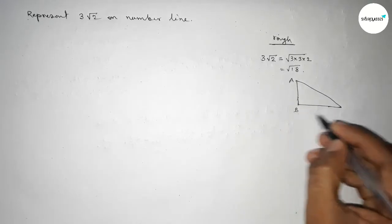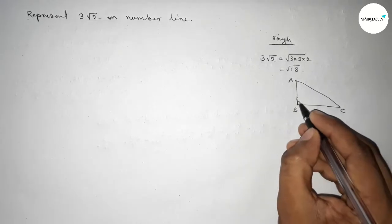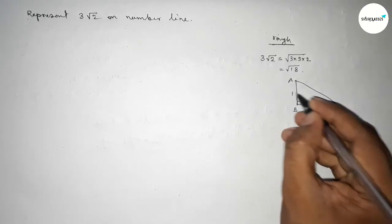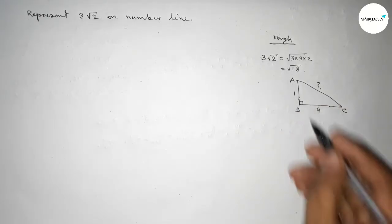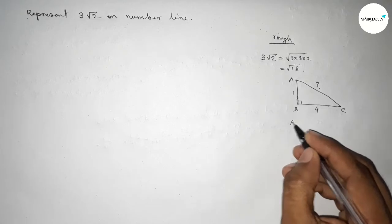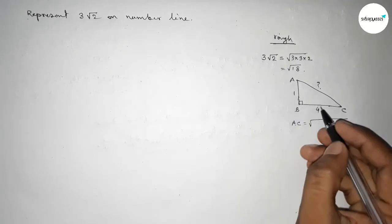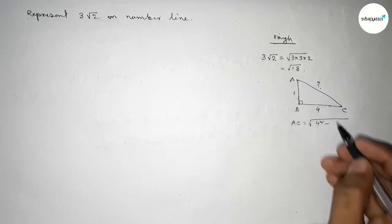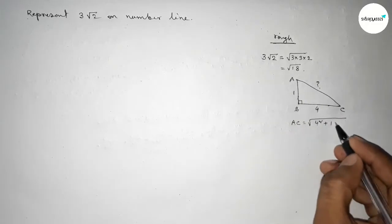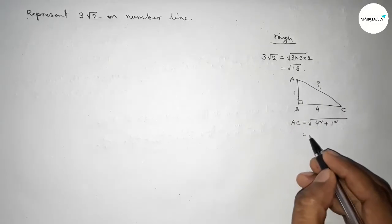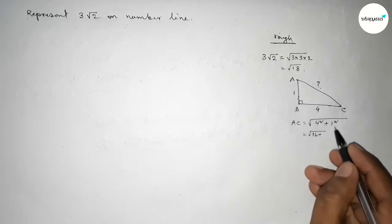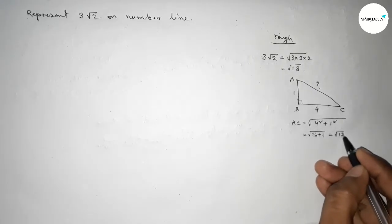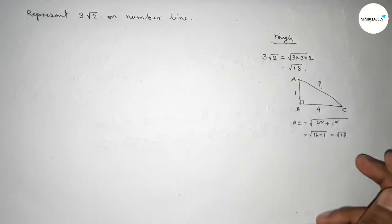Drawing a right angle triangle ABC with base equal to 4 units and height equal to 1 unit. Then by Pythagoras theorem, hypotenuse equals √(base² + height²) = √(4² + 1²) = √(16 + 1) = √17.